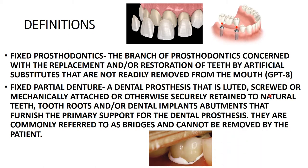'Screwed' refers to implants — you use implants to prepare fixed partial dentures. 'Mechanically attached' applies when a tooth is endodontically treated and the crown is grossly destructed. In that case, you cannot prepare the crown directly, so you take support from the root with the help of a post — that is the post and core — and then place an artificial crown on top.